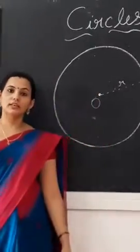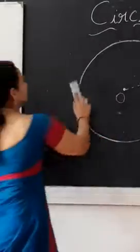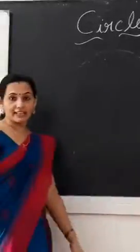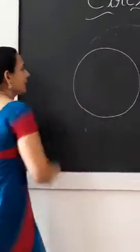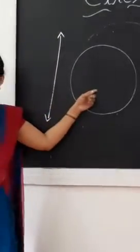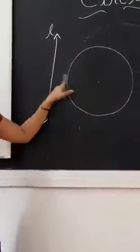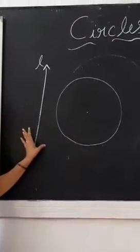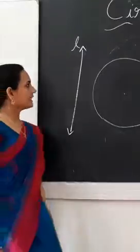This year we are going to learn how a circle behaves with a line. If we draw a circle and a line on a plane, in the first case the line does not touch the circle. This line is called a non-intersecting line because it does not touch the circle.